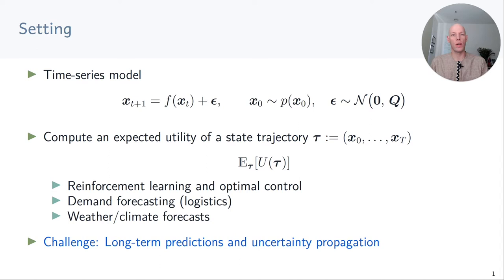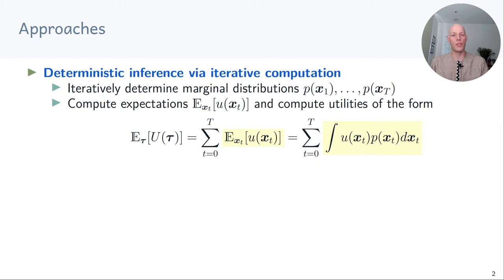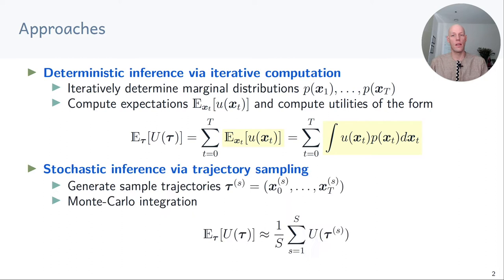We're looking at two approaches for long-term predictions. First we'll discuss deterministic inference approaches where we iteratively compute the state marginals p of x1 to p of x capital T and then compute expected utilities at every time step by computing this integral. By summing them up we get the expected long-term utility. A second approach we'll discuss is stochastic inference via trajectory sampling, where we generate sample trajectories tau s and use Monte Carlo integration to get the expected long-term utility.